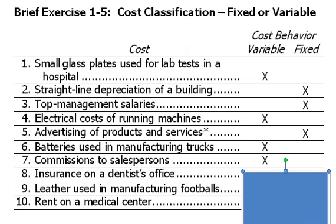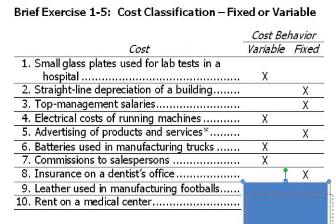Insurance on a dentist's office: normally the insurance rate — whether general insurance or even liability insurance — may not be impacted by the number of patients the dentist sees, the number of hours worked, or the number of dollars billed. So I would assume that to be a fixed cost. The leather used in manufacturing footballs: since we're making footballs, the more we make, the more leather we would incur — so the greater the cost of leather, that would be a variable cost.